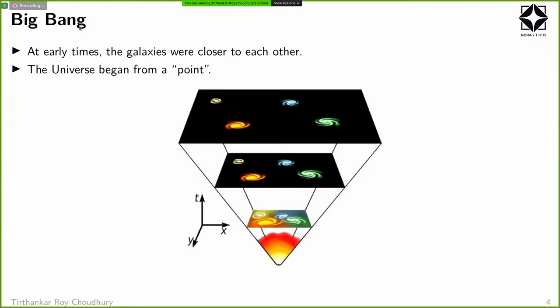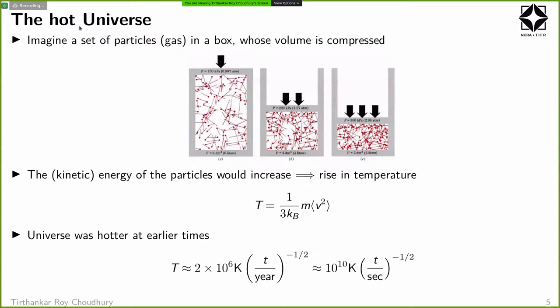The expansion of the universe, coupled with various things we know, led to the Big Bang model. At early times, galaxies were closer to each other, and going back in time, the universe would have begun from a very small region. From basic thermodynamics, if you compress a volume without letting heat escape, the temperature increases. So the universe at very early times would be much hotter than today — we can calculate the temperature as a function of the age.